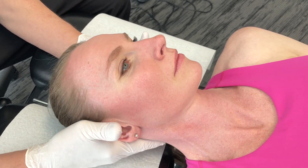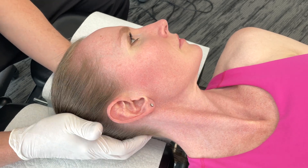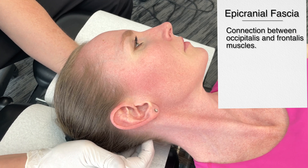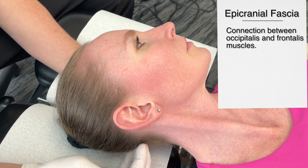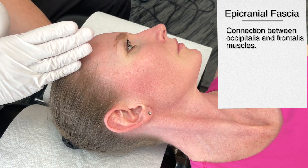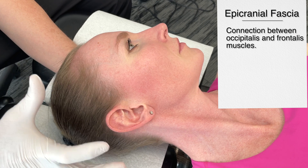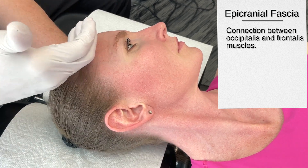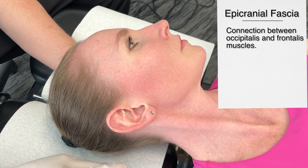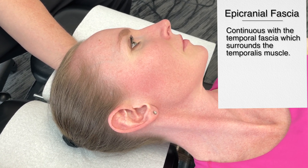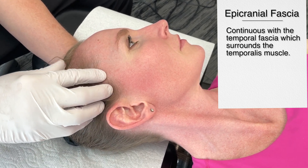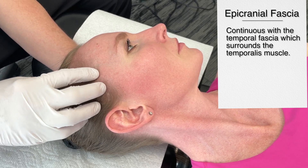There are three fascial planes I want to talk about. The first is what we refer to as the epicranial fascia. The epicranial fascia serves as a connection between the occipitalis and the frontalis muscle — so from the base of the skull all the way up to the front. Whatever happens here is going to greatly influence the entire area. This particular fascia extends continuously to the temporal fascia, the temporal muscle, and in fact envelops the entire temporalis muscle.